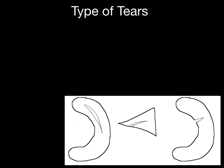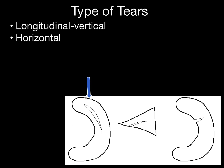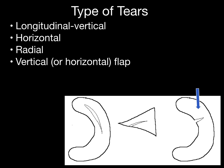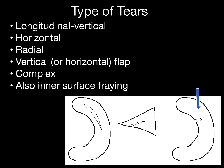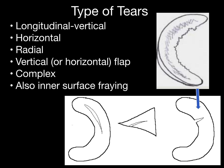Types of meniscal tears include: longitudinal vertical tear, horizontal tear, radial tear, and vertical or horizontal flap tear. A complex tear is a combination of the above.